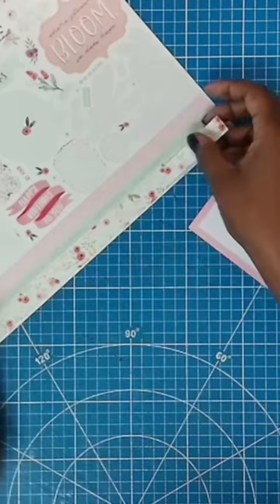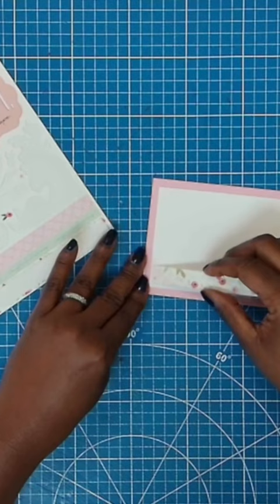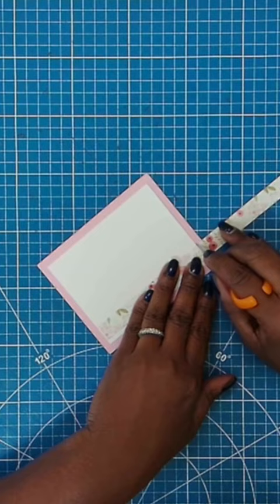I'm going to take this border strip from my sticker sheet and we're going to place it down like this. And then I'll just trim off my excess very carefully.